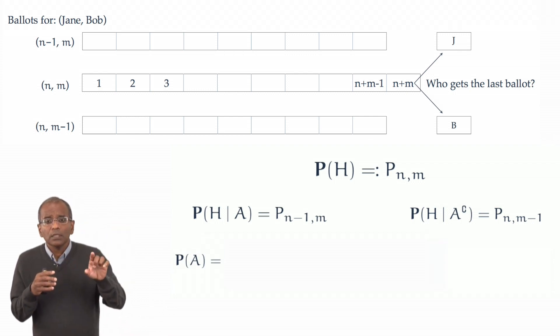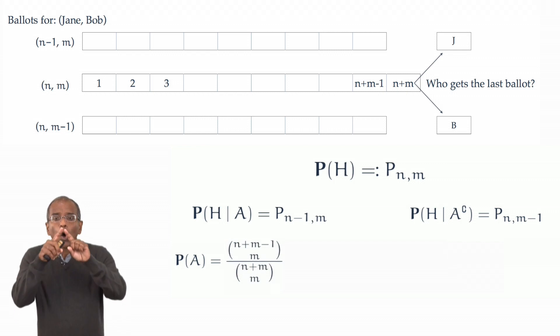Well, this is simple enough. The last ballot now is fixed to be J. That leaves n plus m minus 1 ballots. Of those n plus m minus 1 ballots, m belong to Bob, and the number of ways of arranging m B's and n minus 1 J's in the first n plus m minus 1 ballots is n plus m minus 1 choose m. How many ways are there of arranging m ballots for Bob in totality? Well, there are n plus m ballots, and Bob can be the m ballots for Bob could be in any of m locations. That's n plus m choose m. We take a ratio, simplify the binomial coefficients, and we get n over n plus m.